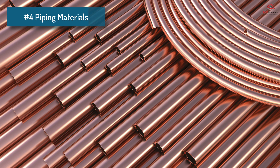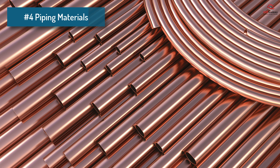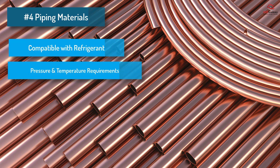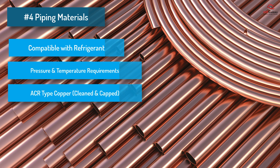4. Piping materials. The material used for the piping should be compatible with the refrigerant and should be able to withstand the pressure and temperature of the system. ACR type copper tubing is commonly used for refrigerant piping in the HVACR industry.